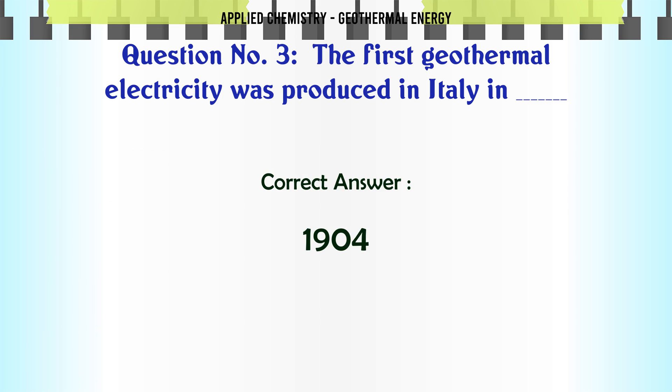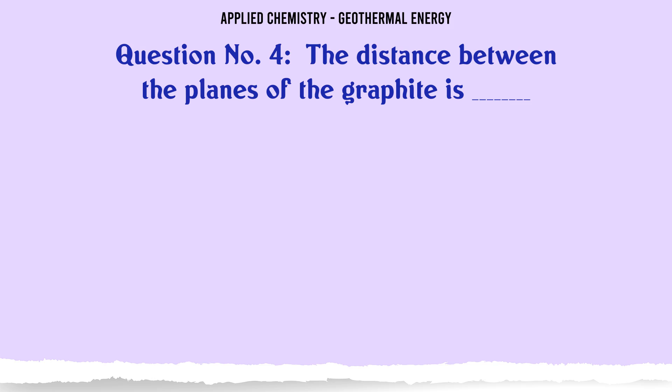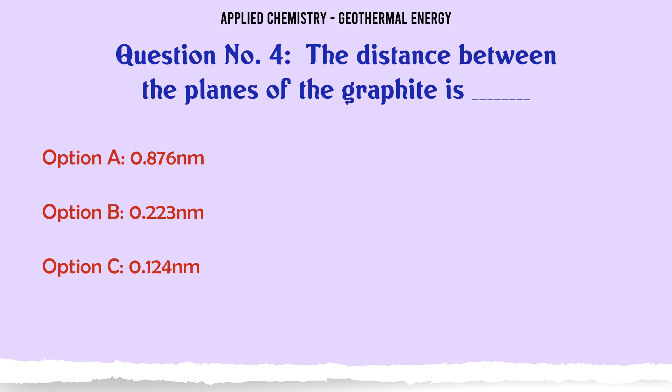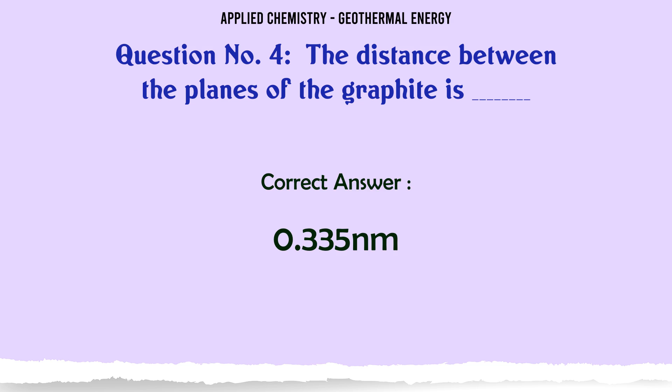The distance between the planes of graphite is: A: 0.876 nm, B: 0.223 nm, C: 0.124 nm, D: 0.335 nm. The correct answer is 0.335 nm.